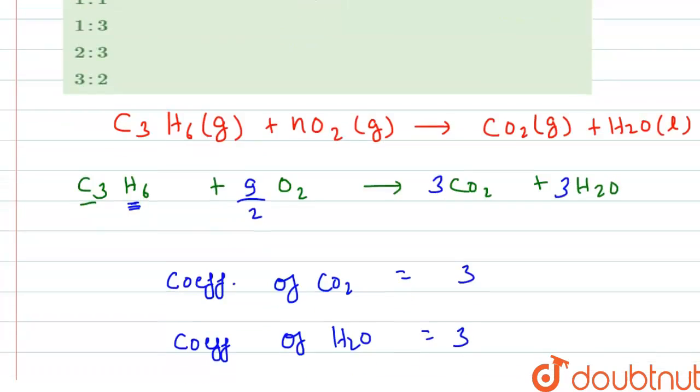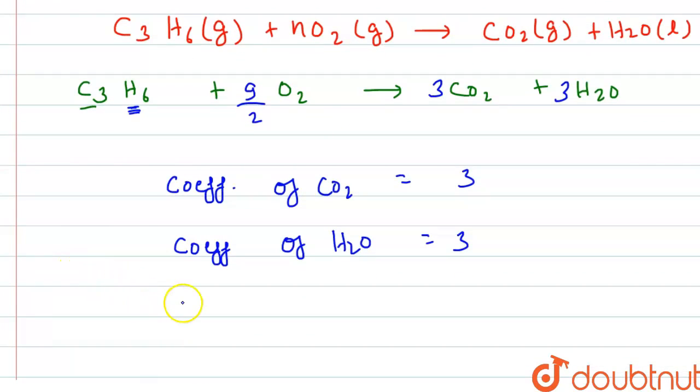The question is asking about the ratio, so our final answer will be 3 over 3, which equals 1:1.